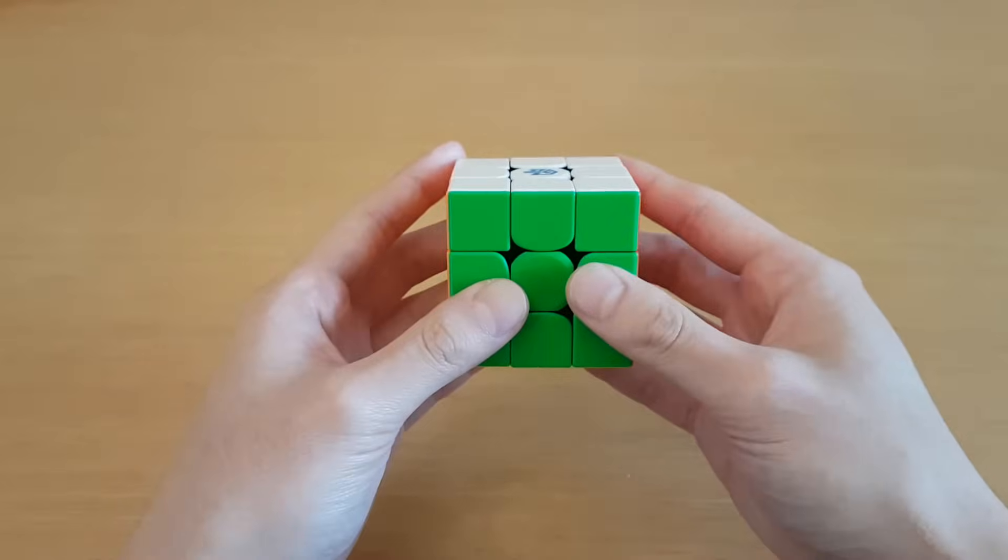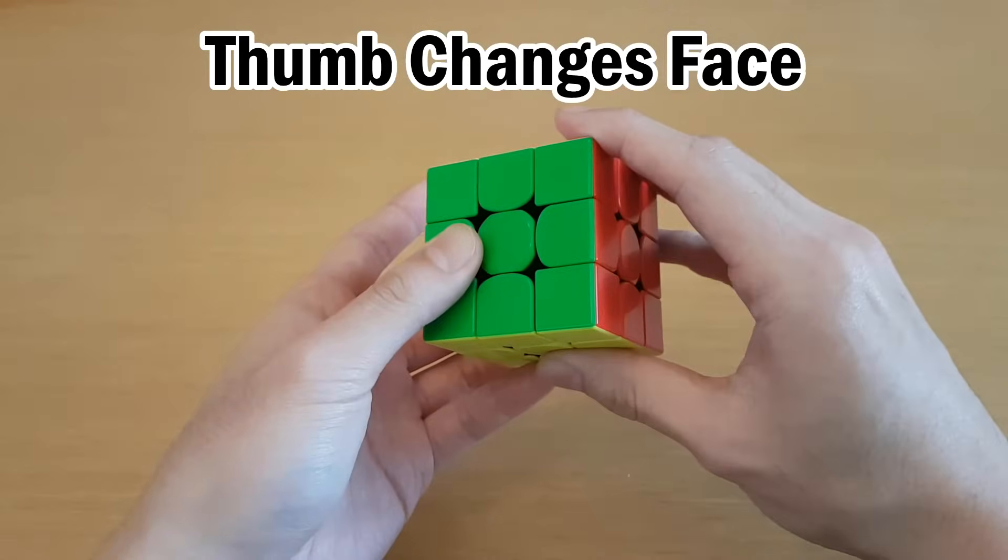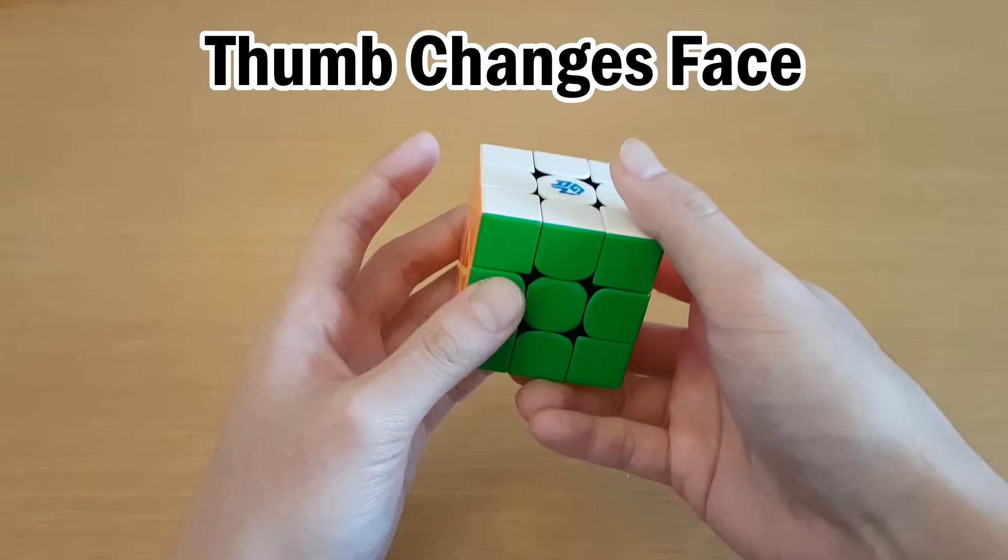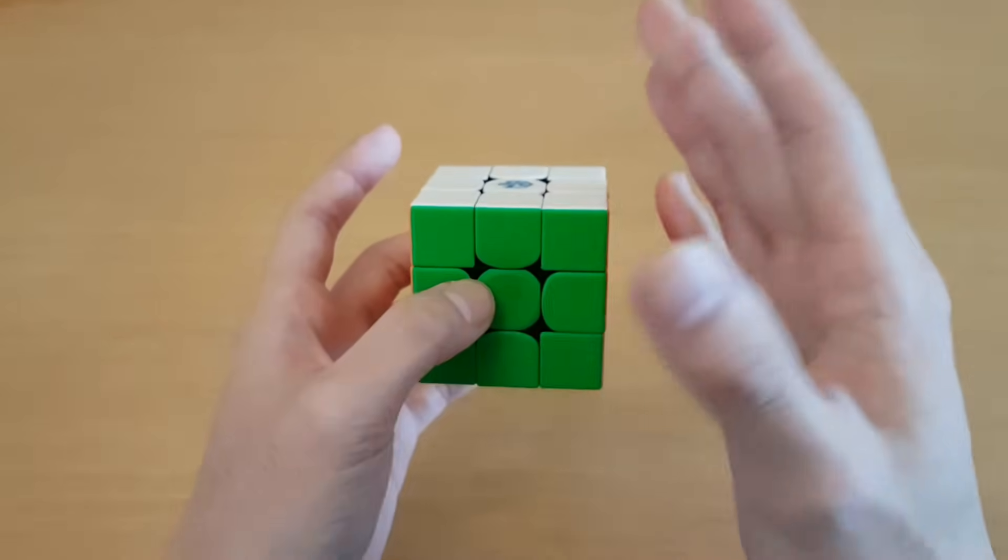The next thing is re-grips, and this is a pretty big one, but you have to make sure that you're counting them correctly. First of all, what is a re-grip? It's normally that your thumbs are both on the front, and anytime you change one of them, then that counts as a re-grip. That's the most basic kind of re-grip.